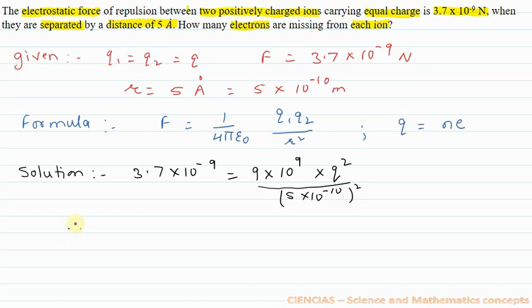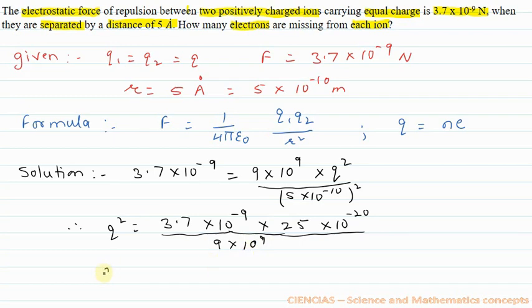Therefore, Q² = (3.7 × 10^-9 × 25 × 10^-20) / (9 × 10^9). On solving this,